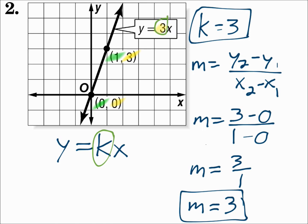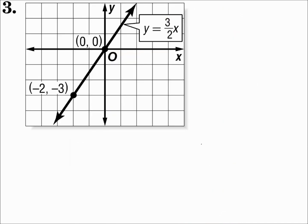Whatever k is, that's the constant of variation, and it's the slope. Number 3. Here's another graph of a direct variation equation: y equals 3 halves x. Notice again, a direct variation equation goes through the origin because it has a y-intercept of 0. This is in the form y equals kx, and in this case k is 3 halves.